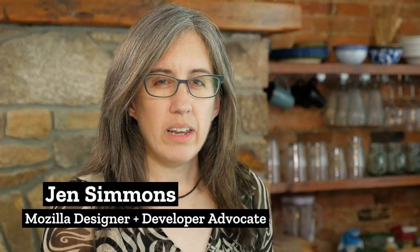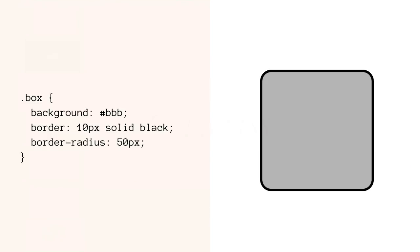Let's get into exactly how to write CSS to make it work in every browser. Here's an example. We've got a simple box — maybe a div with a box class on it — and we've applied some CSS: a background of gray, a border solid black 10 pixels, and a border radius of 50 pixels.